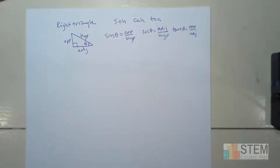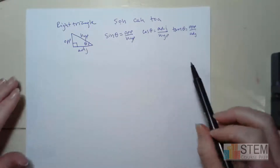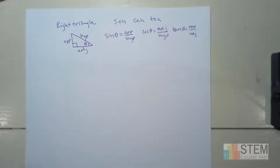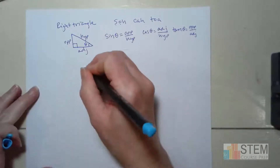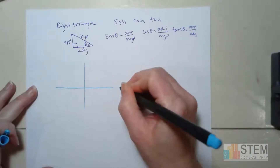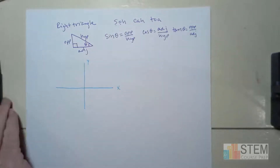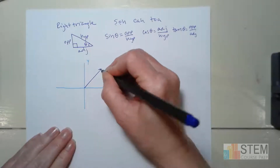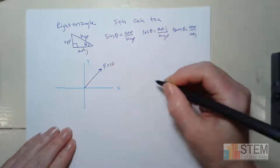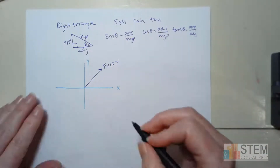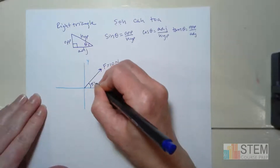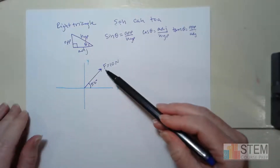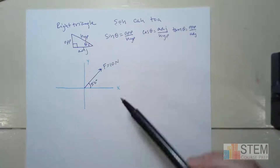Resolving your force into components is going to come back to this, and we're going to be focusing on the sine and cosine part. So let's draw a 2D Cartesian system with X and Y. Now let's draw a force — let's say it's 10 Newtons — and I've got this angle right here, let's say it's 50 degrees. So I have that force and I need to break it up into the X and Y components.